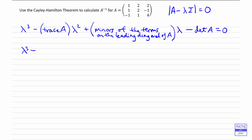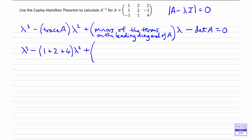So now we put some numbers in. The trace of A is just the sum of the numbers on the leading diagonal — so we've got 1 plus 2 plus 4 — looking at the diagonal going from top left to bottom right — and that gives us the coefficient of lambda squared.